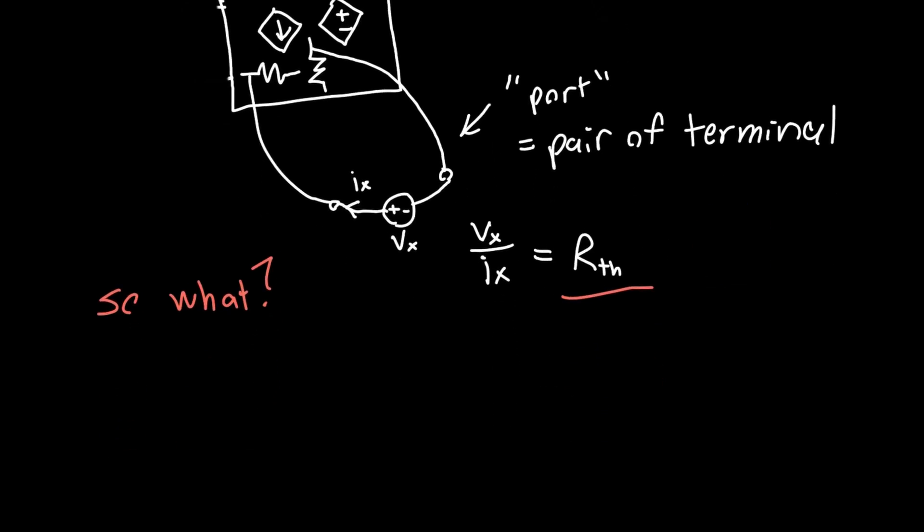And the reason it matters is because remember we said that we can model basically any useful amplifier circuit as some voltage source. So initially it's got some input resistance Rin, it's got some output resistance Rout, and some voltage source which is equal to A times Vin.